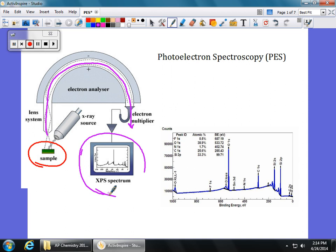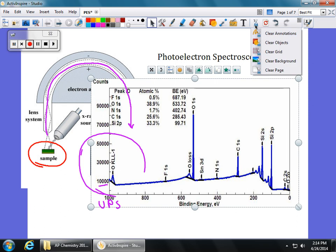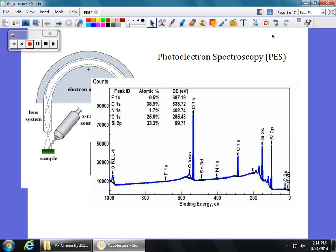Now this can be done with x-rays. You could also do this with ultraviolet light. Instead of being called XPS, ultraviolet light is called UPS. And you get something that looks like this over here. Now this is a fairly complicated one. And this would be a mixture of different elements. But what you're going to see is a series of peaks.